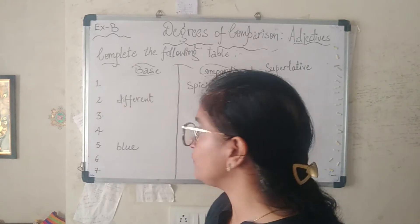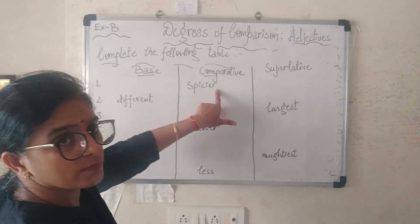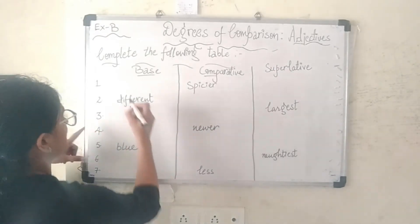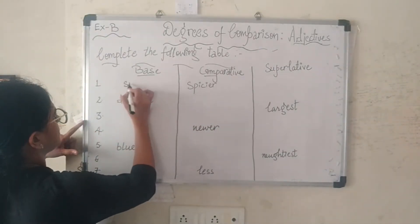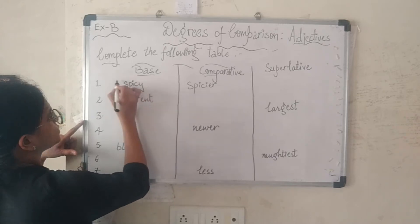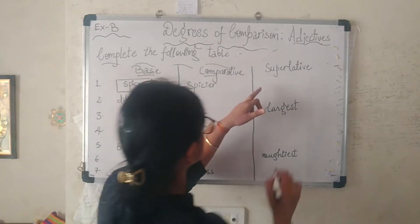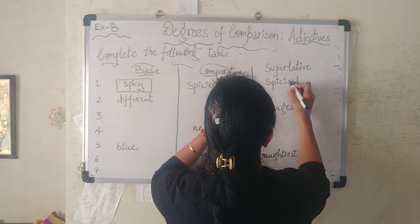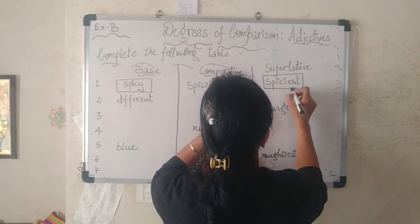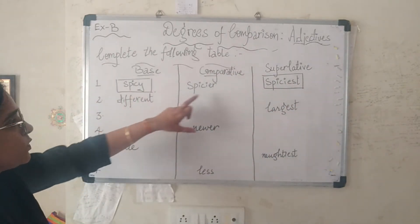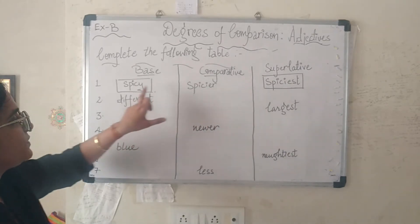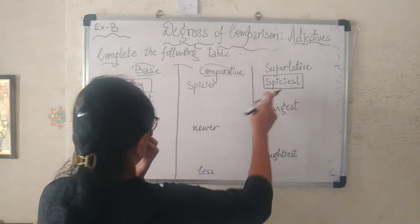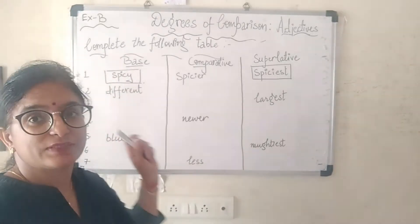The first comparative given is 'spicier'. The base form is 'spicy' (s-p-i-c-y), and the superlative is 'spiciest'. Remember: when a word ends in '-ier', the base form ends in 'y', and the superlative is written with '-iest'.